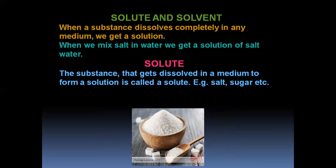Solute and solvent: When a substance dissolves completely in any medium, we get a solution. When we mix salt in water, we get a solution of salt water. In the solution, the substance that gets dissolved in a medium to form a solution is called a solute. Examples: salt, sugar, etc. You can see the picture — that is sugar crystals. It dissolves in water and is called a solute.